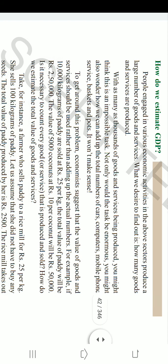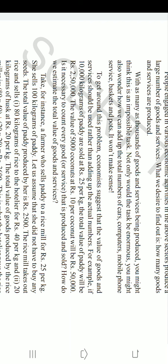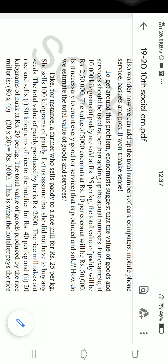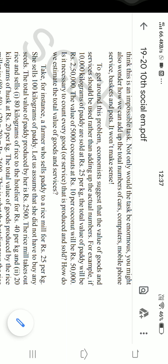For example, if 10,000 kilograms of paddy is sold at ₹25 per kg, then the total value of the paddy will be ₹2,50,000 — that is 10,000 into 25. Then the value of 5,000 coconuts, if sold at ₹10 each, becomes ₹50,000. In that way, we take the total value instead of the total number. In place of saying 'ten thousand kilograms of paddy,' we take what is the value of those ten thousand kilograms.